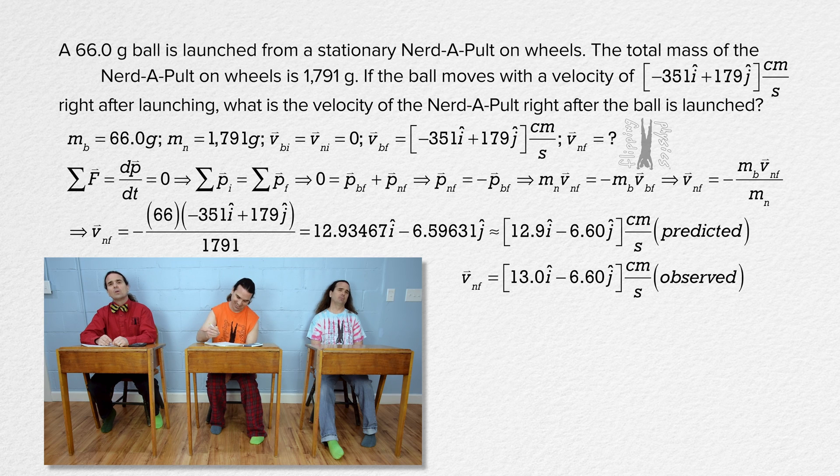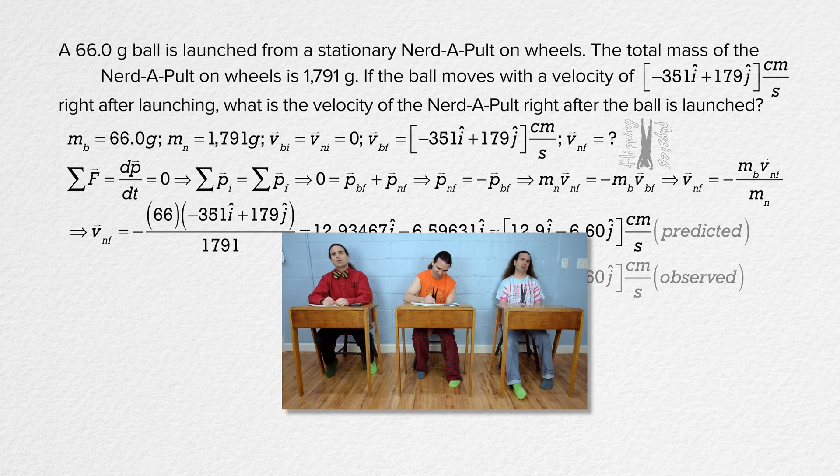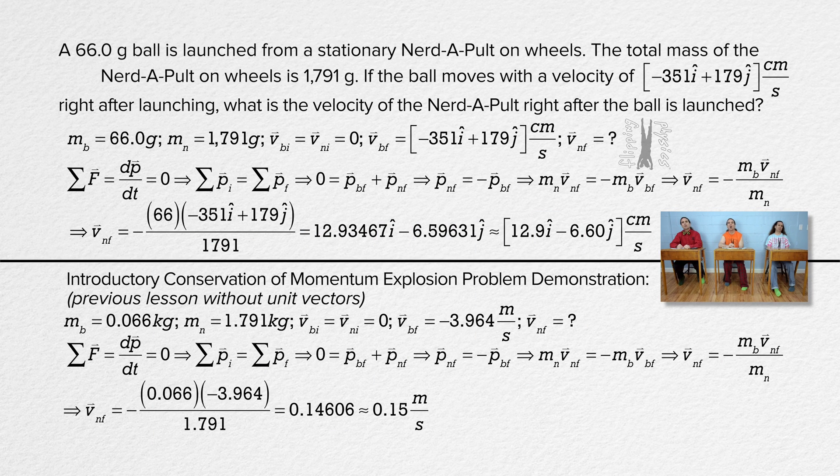You know, that was almost exactly the same as when we did this without unit vectors. Yeah, we used the conservation of momentum equation in the exact same way to solve for the final velocity of the Nerdapult and then just substituted in the unit vector version of the final velocity of the ball to get the unit vector version of the final velocity of the Nerdapult. Yeah, almost exactly the same.